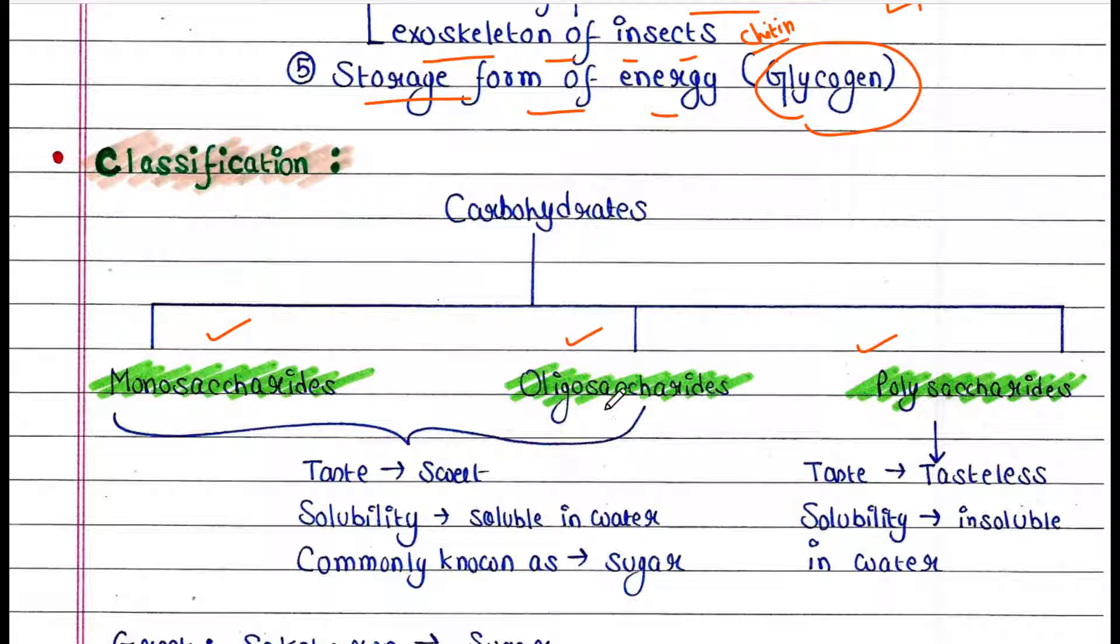Monosaccharides and oligosaccharides are sweet in taste. They are soluble in water, and since they are sweet in taste, they are commonly known as sugar. But polysaccharides are tasteless and they are insoluble in water.